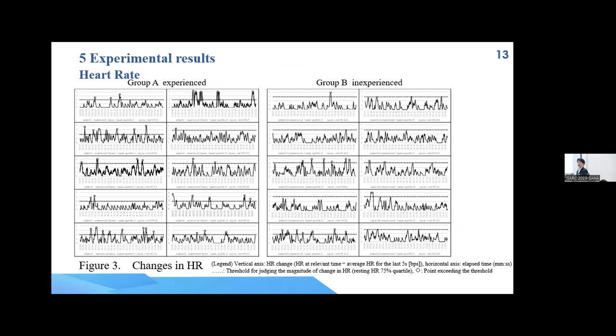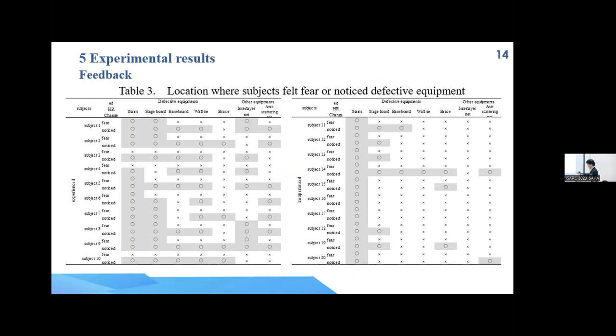And these are all heart rate data. Vertical axis is a change value of heart rate, and this line is a threshold of peak change. And these are feedback results. Circle marks indicate feeling fear or noticing something in VR content.